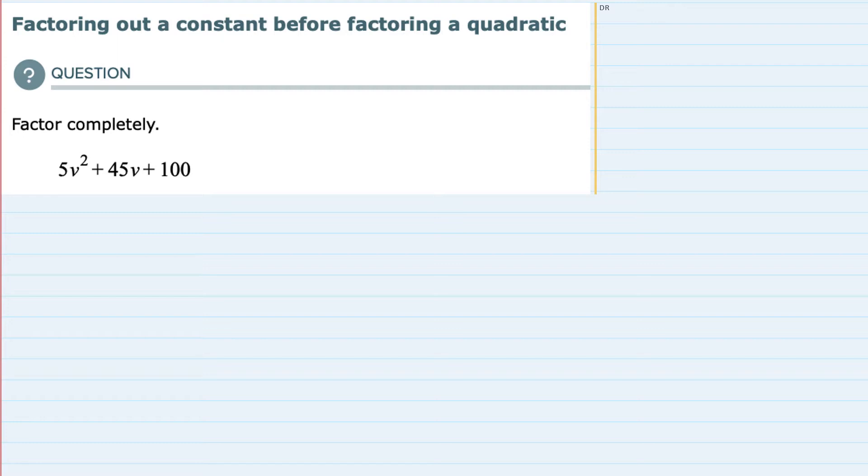So we have two pieces here for the instructions. First, factoring out a constant, and then we're also asked to factor the quadratic that remains. Looking at this example,